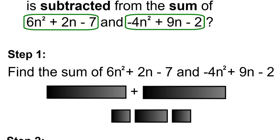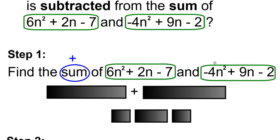Step 1. Find the sum, and the sum will be adding these two polynomials together: 6n squared plus 2n minus 7 and negative 4n squared plus 9n minus 2.